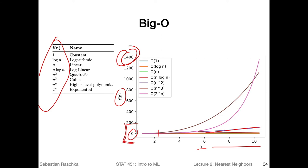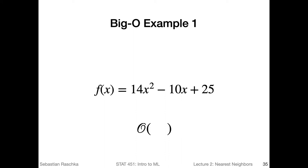As we increase n, certain functions become increasingly bad. Something like cubic becomes really bad really fast. And especially the exponential one — it explodes very soon, even with small numbers. So we usually want to avoid exponential growth in machine learning in terms of dataset size. To explain how we get from a function to its Big O notation, here's an example.